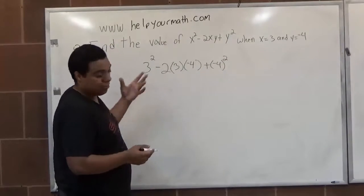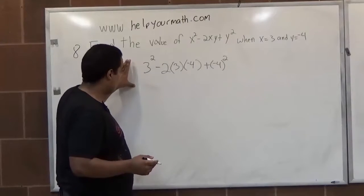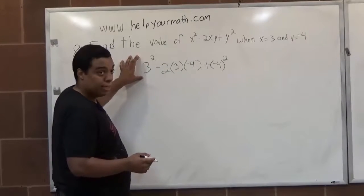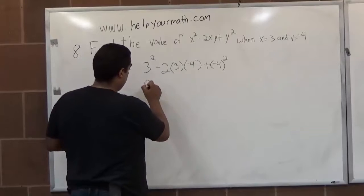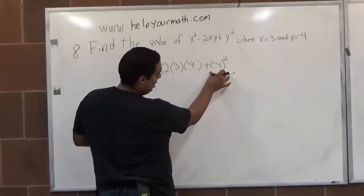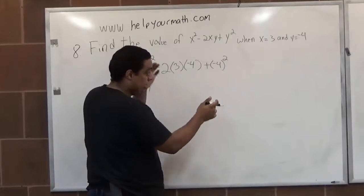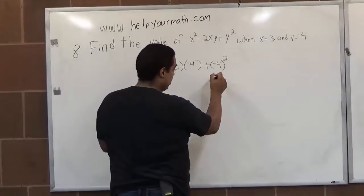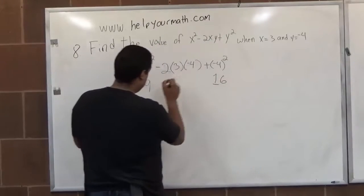So 3 squared, order of operations is exponents first, so 3 squared is 9. 3 times 3 equals 9. And negative 4 squared is 16. Negative 4 times negative 4 equals 16. And the rest we can just copy down.